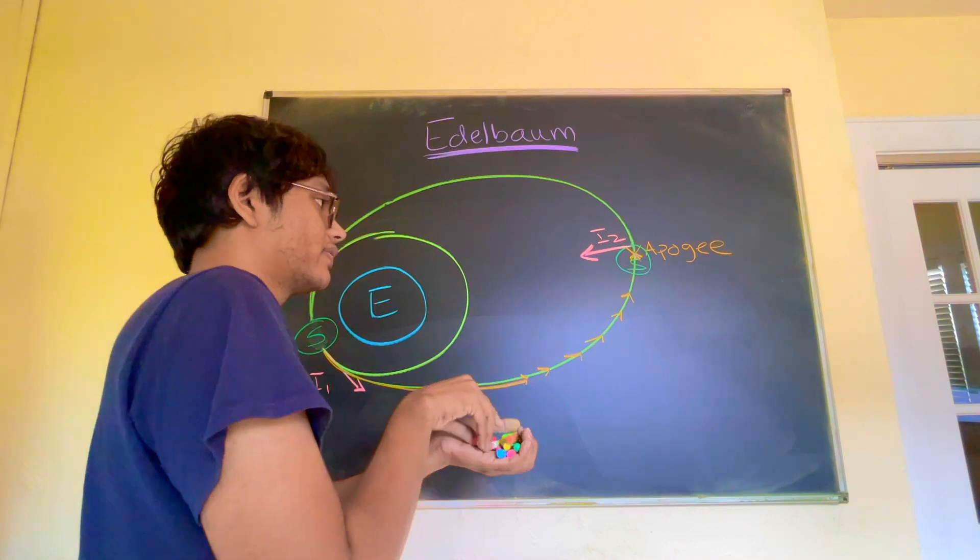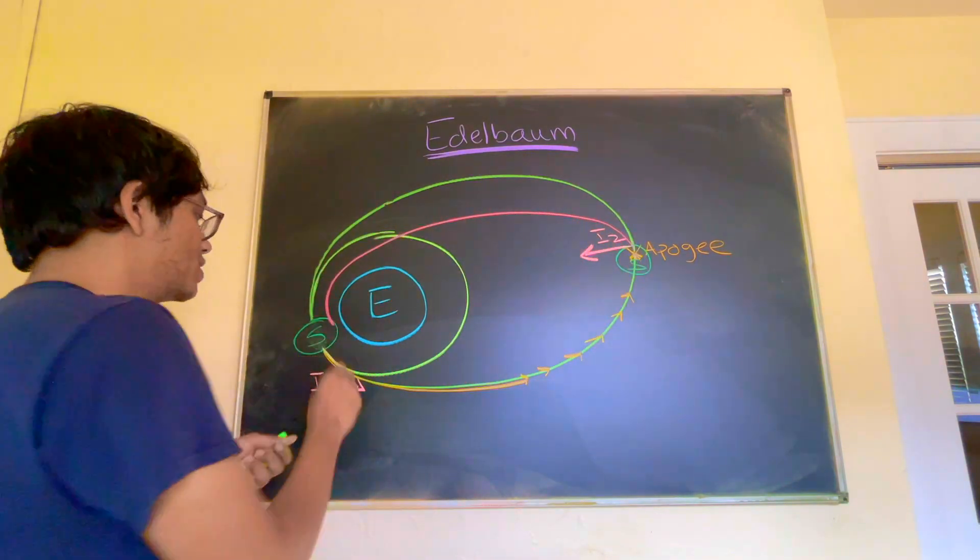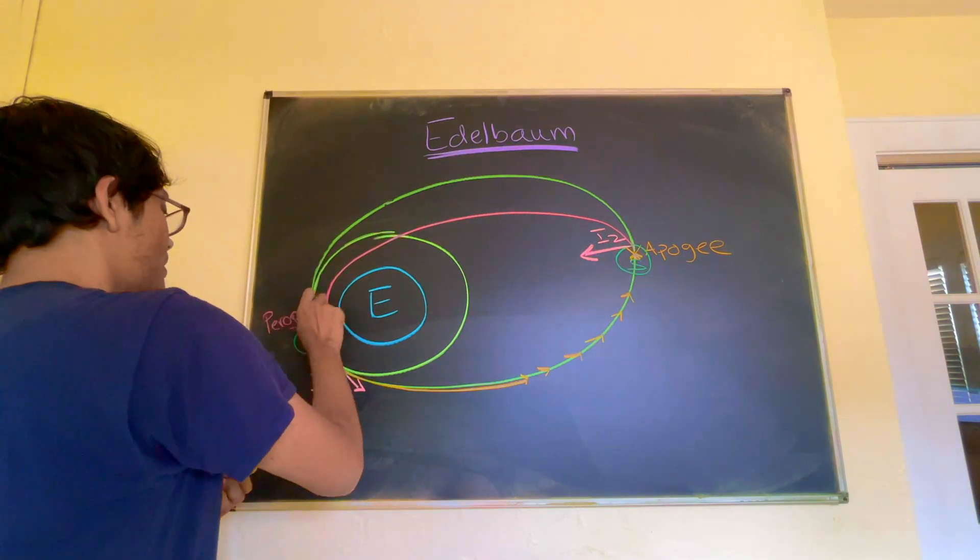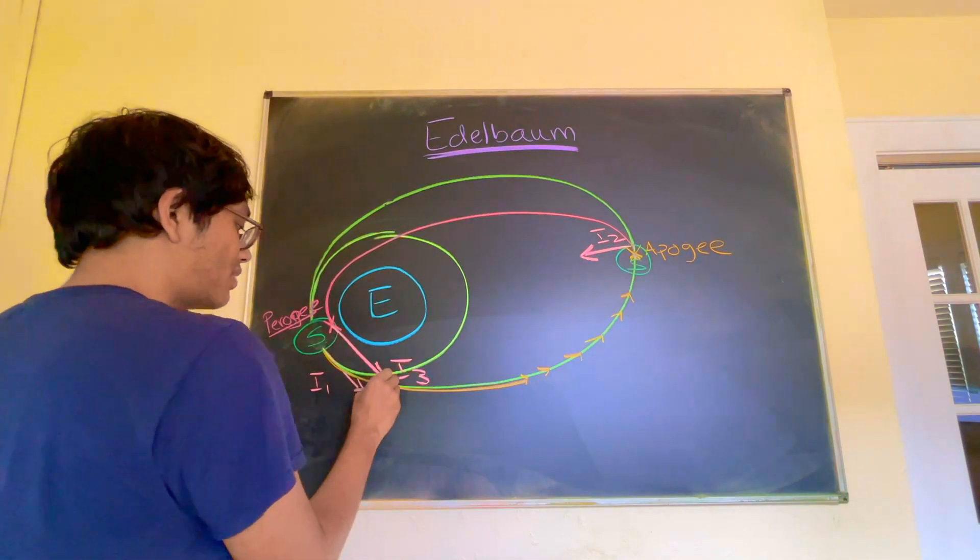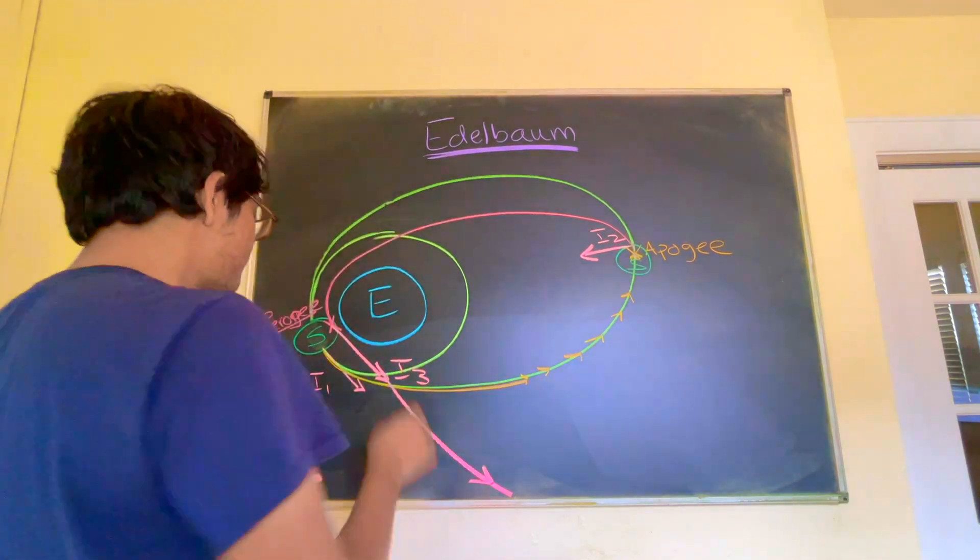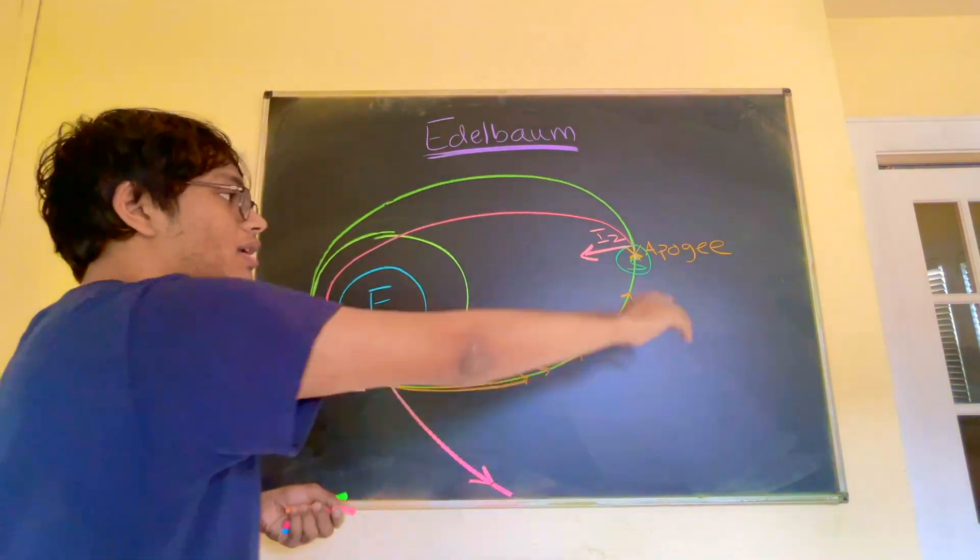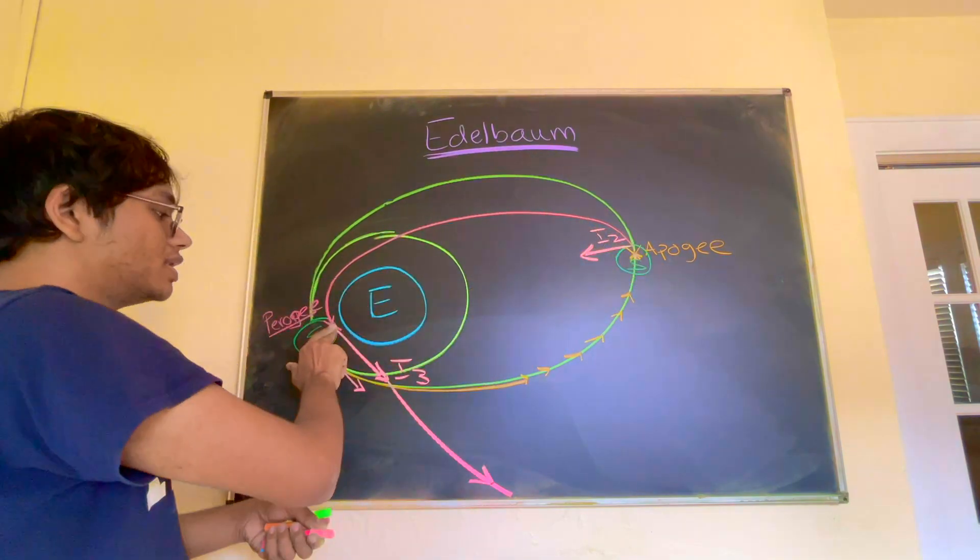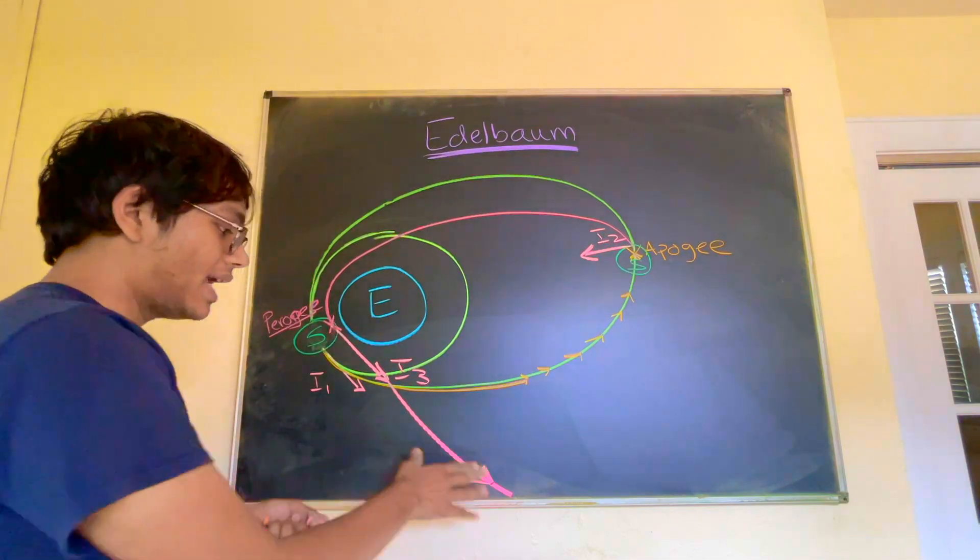So because of this second impulse, what's gonna happen? I'm gonna have another elliptical orbit that goes very close to the Earth. And right at perigee, at perigee, I'm gonna burn again. That's gonna be my third impulse. Right there. That's my third burn. It's gonna take me out of circular orbit into hyperbolic trajectory. So that's how I can escape the Earth. So I went from a circular orbit to an elliptical orbit to another elliptical orbit. And that's how the Edelbaum maneuver works.